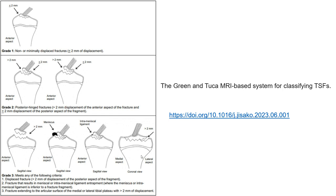Grade 3 fractures result in meniscal or inter-meniscal ligament interposition. The fragment is standing into the articular surface of the medial or lateral tibial plateau, with more than 2 mm displacement.